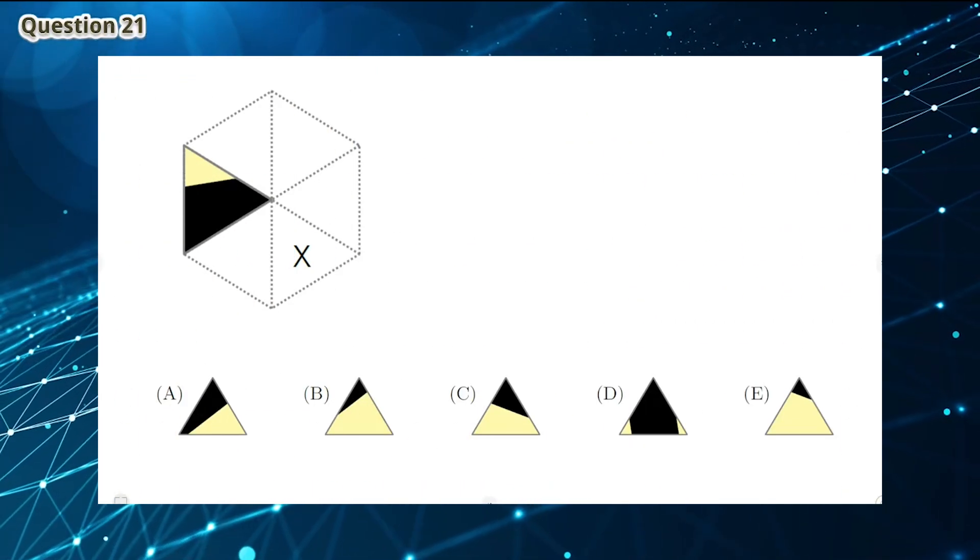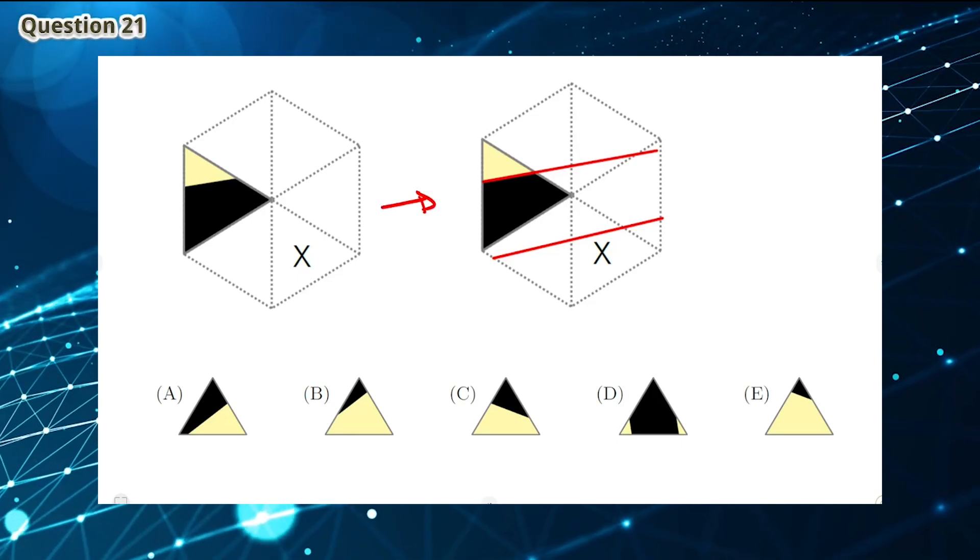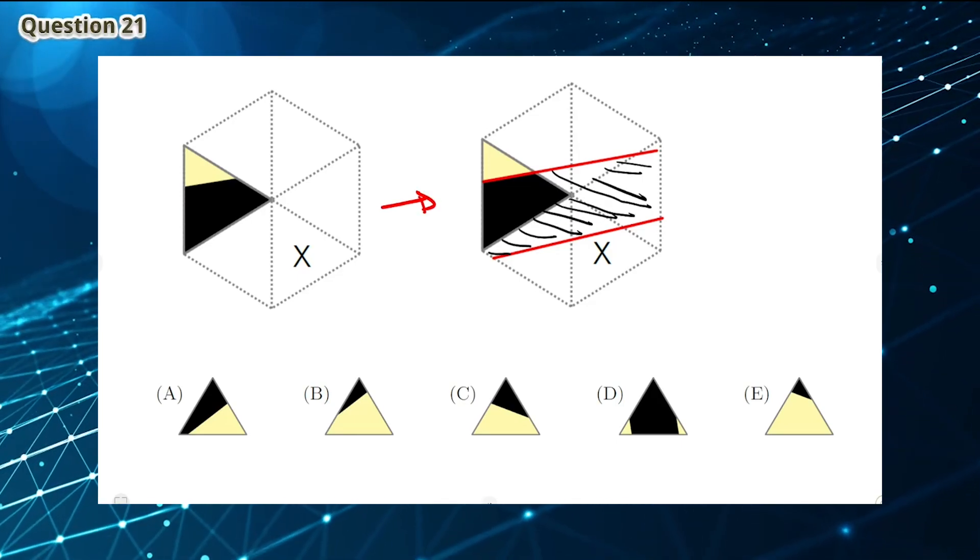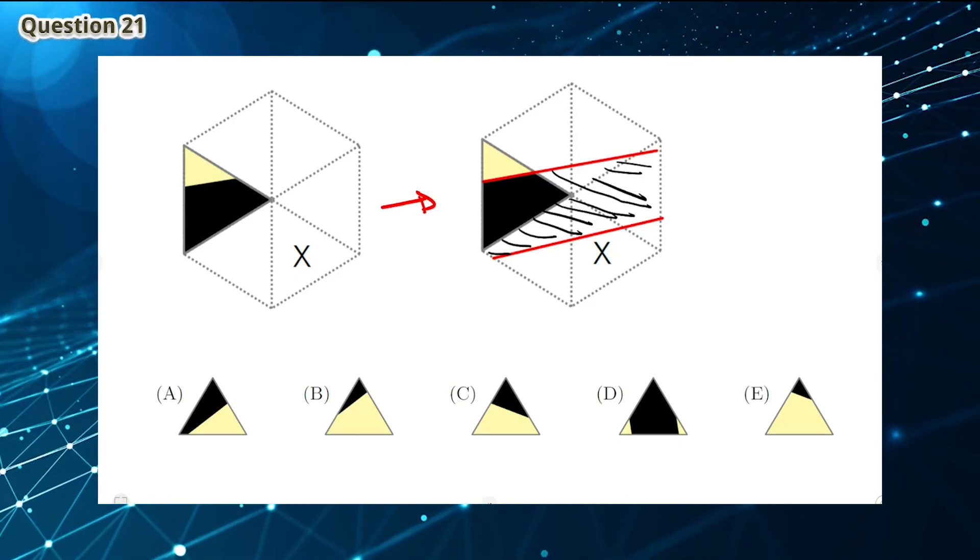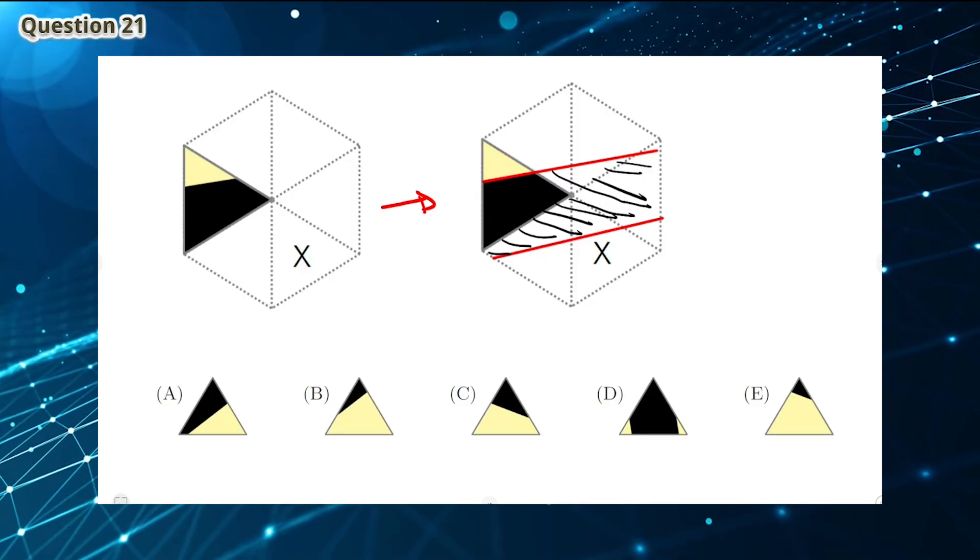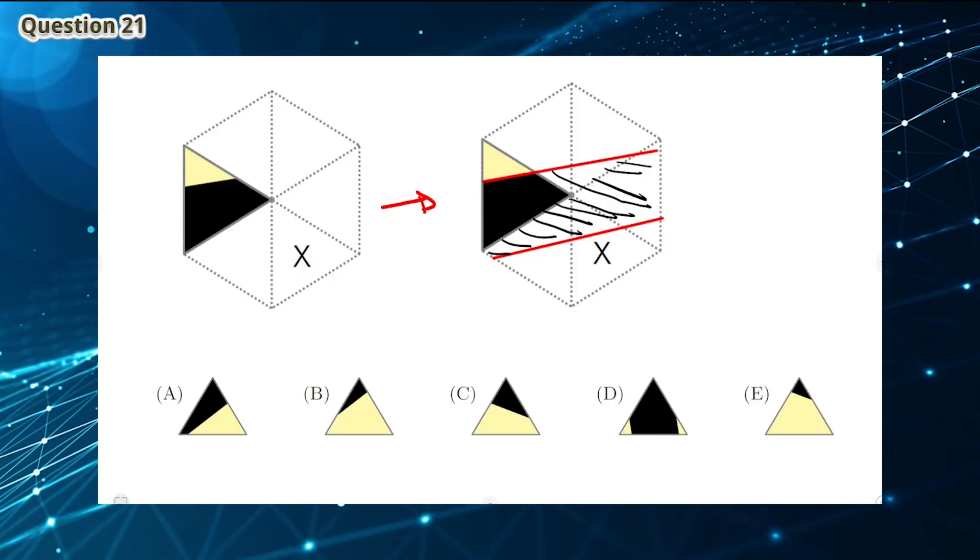Question 21: As you can see, we can expand the line as shown. We need to find the shape that's painted X. Out of the answers, the only shape that matches this painting is C.